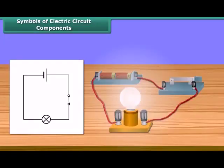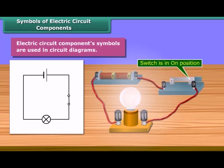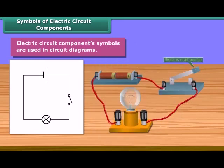Electric circuit component symbols are used to make circuit diagrams. It is much easier to represent a circuit diagram using symbols. This is the symbol of a switch in the on position; this one is in the off position.